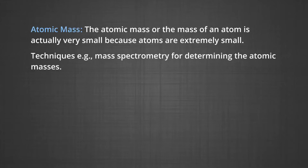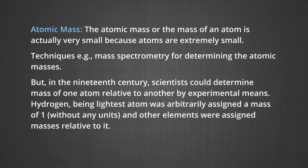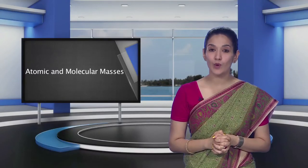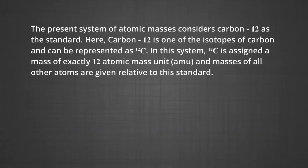But in the 19th century, scientists could determine mass of one atom relative to another by experimental means. Hydrogen, being the lightest atom, was arbitrarily assigned a mass of one, without any units, and other elements were assigned masses relative to it. However, as agreed upon in 1961, the present system of atomic masses considers carbon-12 as the standard. Carbon-12 is one of the isotopes of carbon, and can be represented as C-12.